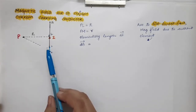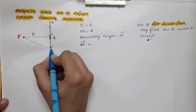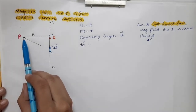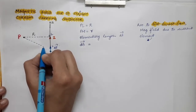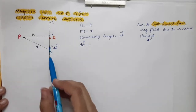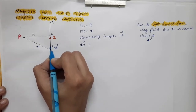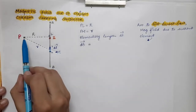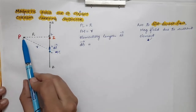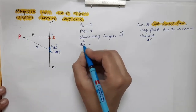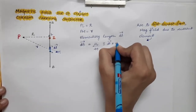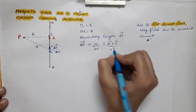Now I am supposing elementary length DL vector. This small length is DL vector. This observation point P is at a distance of small r from this elementary length. Let's denote the point on this elementary length as M, so PM length is equal to small r. The expression of magnetic field at point P due to this elementary length will be: dB vector = μ₀/4π · I · DL vector cross R-cap, divided by R square.